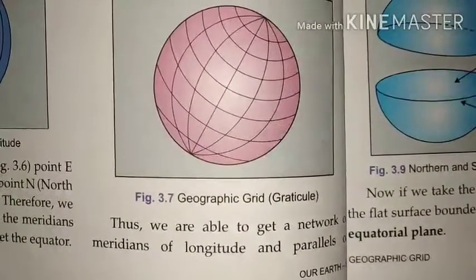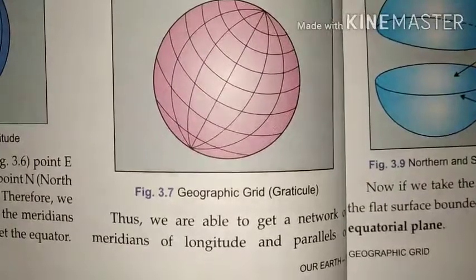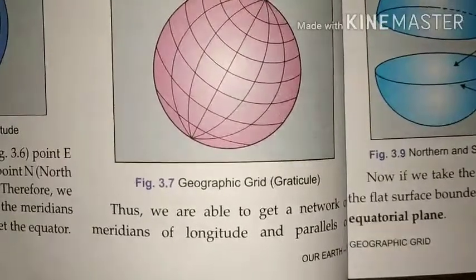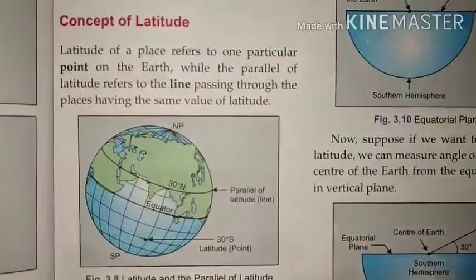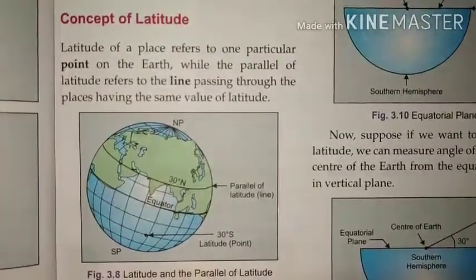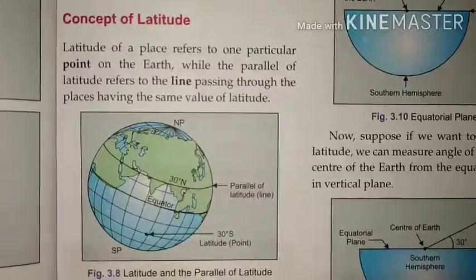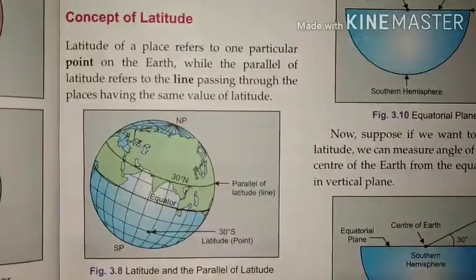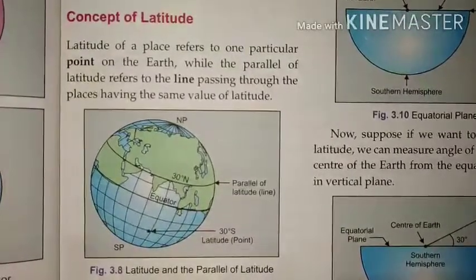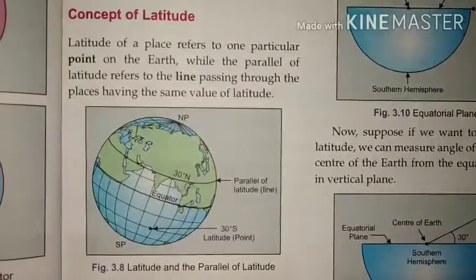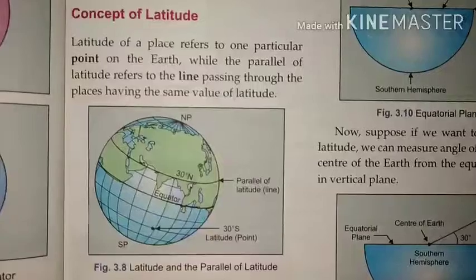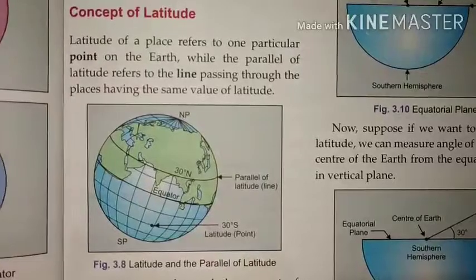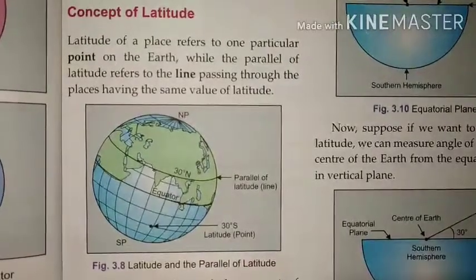We now have a network of meridians of longitude and parallels of latitude on the earth, also termed as the graticule — that is the geographic grid. The latitude of a place refers to one particular point on the earth, while the parallel of latitude refers to the line passing through all places having the same value of latitude.